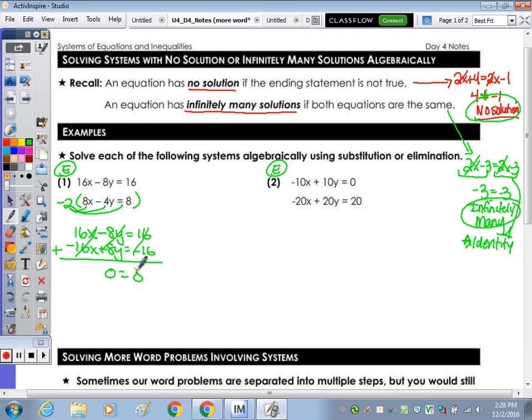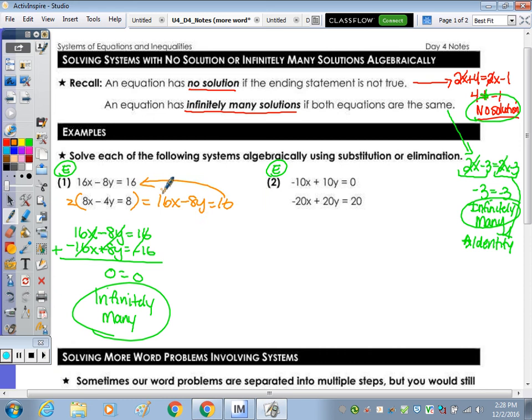That's a true statement, so do we have infinitely many or no solution? Infinitely many. These are the exact same equation. If above, instead of multiplying this by negative two, we just doubled it, we would have gotten 16x minus 8y equals 16. You can see that they're the exact same equation. So if you notice that in the beginning, you can just show what I have in orange and then state the answer, or you can solve it as a system, and then if it's equal, it's infinitely many, and then if it's not, it's no solution.